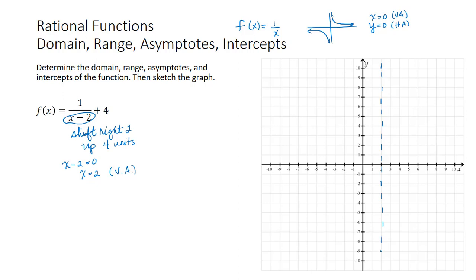And then our horizontal asymptote is going to come from this number on the outside. Plus 4 is going to shift this basic function 1 over x up 4 units. So this horizontal asymptote at y equals 0 has to move up 4 units to y is equal to 4.